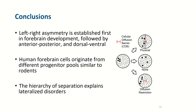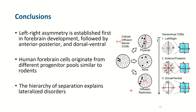In conclusion, we found that the left-right asymmetry is established first in forebrain development, followed by anterior-posterior and dorsal-ventral, which we could conclude from specific markers for inhibitory and excitatory neurons. So we define a cell diffusion barrier, which can be physical or due to diffusion restriction, which follows the hierarchy of left-right, anterior-posterior, and dorsal-ventral. This is in contrast to what people have found for the larger domains of the brain — the forebrain, midbrain, and hindbrain — which are defined before the left-right split, something that we also confirmed within our data. We also find that human forebrain cells originate from different progenitor pools, similar to what has been found in rodents, and we could confirm this in the human for the first time.